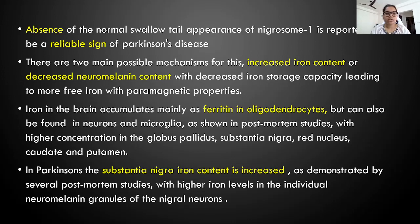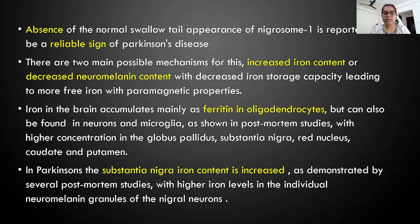There are two main possible mechanisms for this. One is increased iron content or decreased neuromelanin content with decreased iron storage capability, leading to more free iron with paramagnetic properties. Iron in the brain accumulates mainly as ferritin in the oligodendrocytes, but can also be found in neurons and microglia, with higher concentration in the globus pallidus, substantia nigra, red nucleus, caudate, and putamen. In Parkinson's, the substantia nigra iron content is increased, as demonstrated by several postmortem studies with high iron levels in individual neuromelanin granules of nigral neurons.